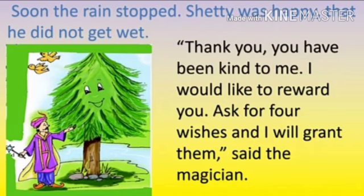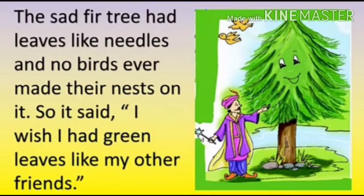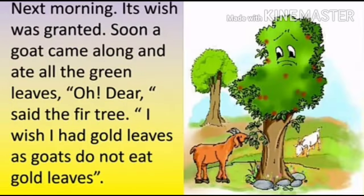The tree was not happy with its leaves because it had needle-like leaves and no birds may nest on it. So it wished to have green leaves like its other friends and its wish got granted.